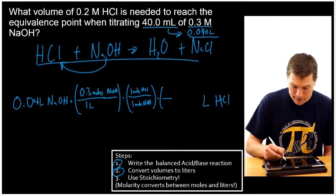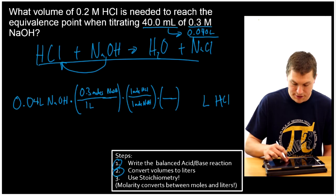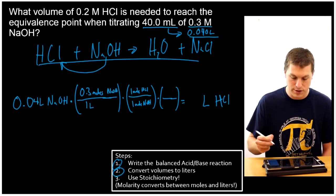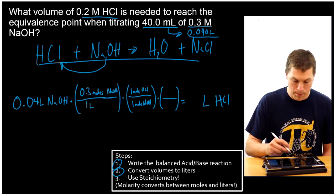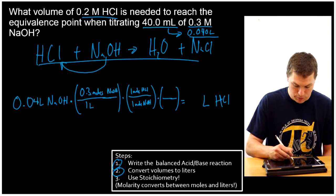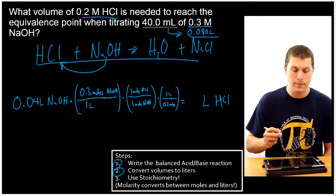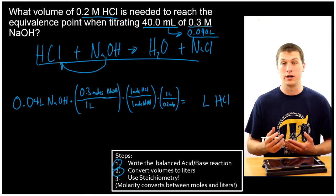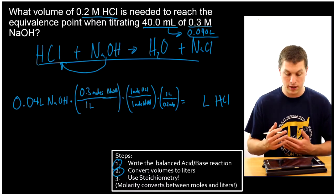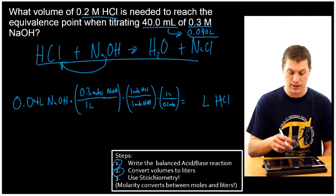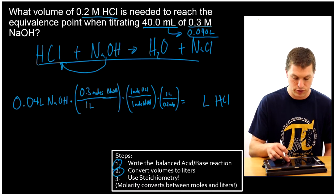Then, last step. To go from moles HCl to liters HCl, I once again need a molarity. This time the molarity for HCl. And this time I want moles on the bottom. So it's going to be 0.2 moles over 1 liter. Remember that molarity is moles over liter. So when I have 0.2 molarity, that's like 0.2 moles over 1 liter. And I can convert that using these factors in my stoichiometry expression.